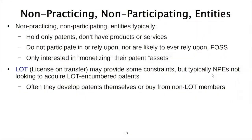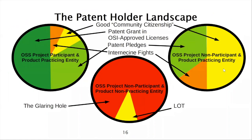The problem is most non-practicing entities are not going to be in the market for patents encumbered by the License on Transfer pledge — they're really looking to either develop their own patents or buy them on the market where there is no such encumbrance against the patent rights. So the non-practicing entities may have a little bit of constraint against asserting patents against FOSS due to the License on Transfer Network, but for the most part it isn't dealing with many of the patents these entities hold.